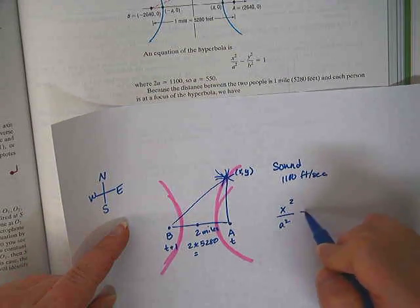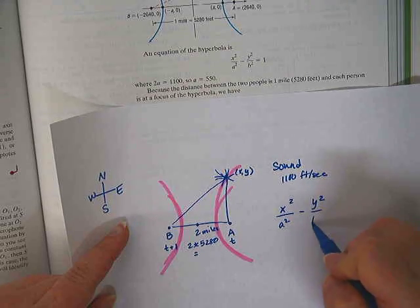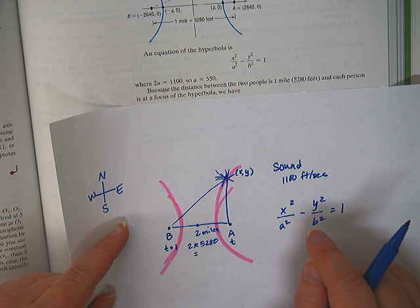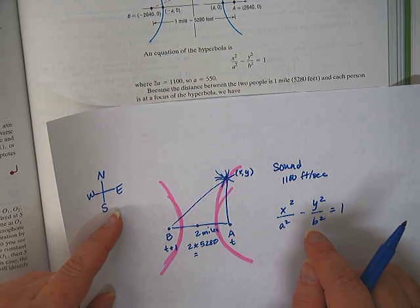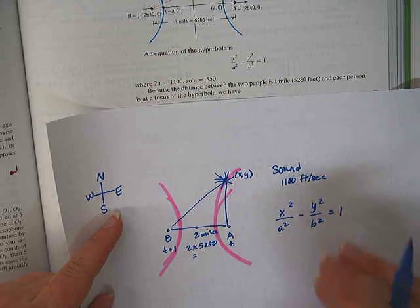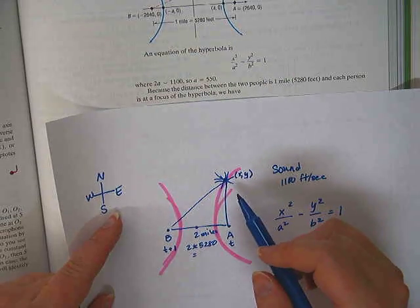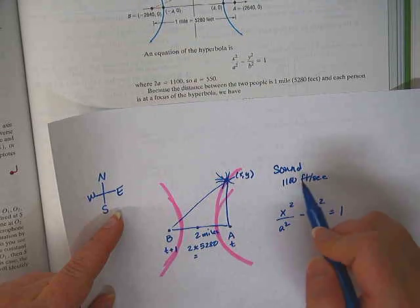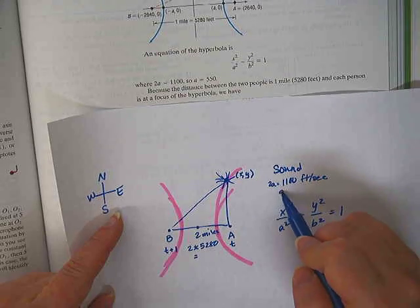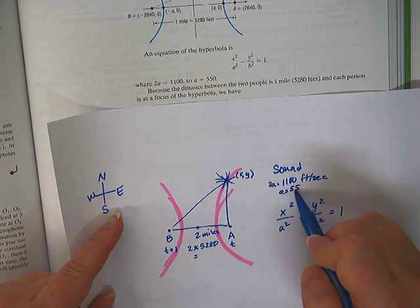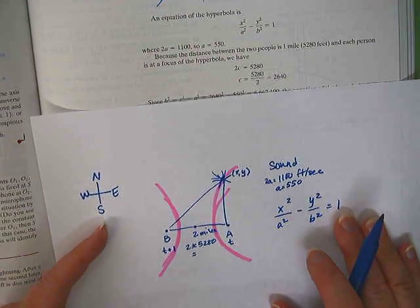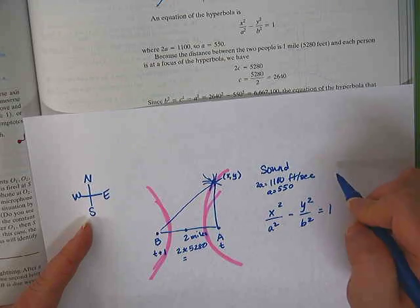And so the equation of a hyperbola is x squared over a squared minus y squared over b squared equals 1. Because the distance between the two people is 2 miles, and each person is at the focus of a hyperbola. Oh, and because sound travels at 1,100 feet per second, that means that 2a equals 1,100. So a is 550. I'm just going through this example.